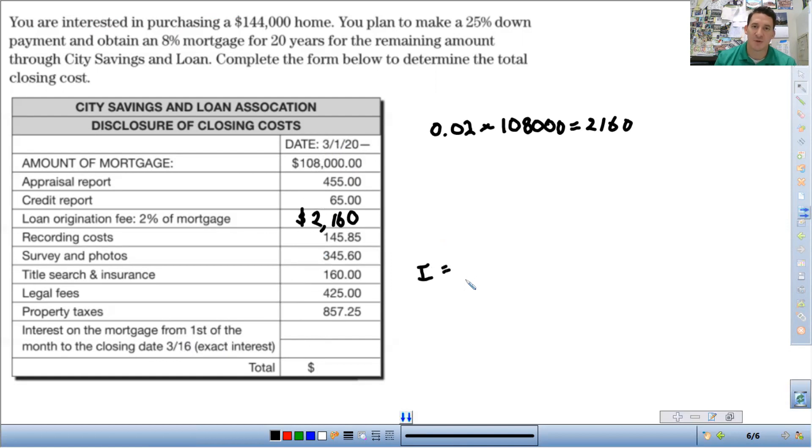So the interest on that is just a simple interest formula. It's the principal times the rate times the time. Remember, for simple interest, time is in terms of years. So the rate is 108,000 times the rate is 0.8%. And times the time, that is from the first to the 16th. That is 15 days divided by 365.